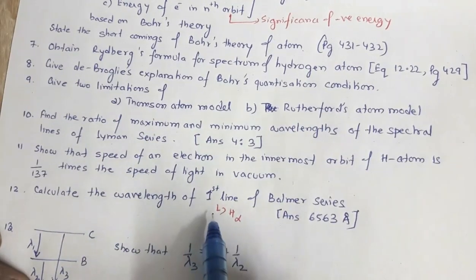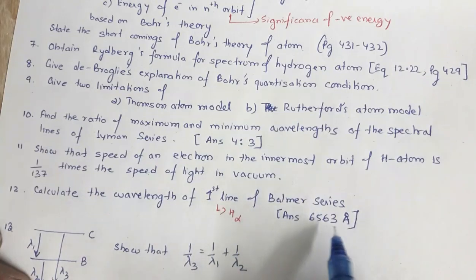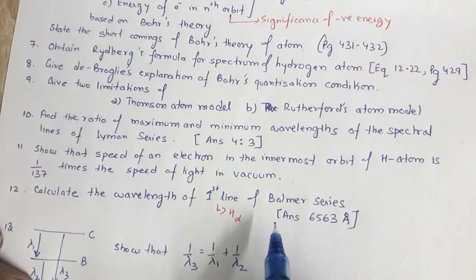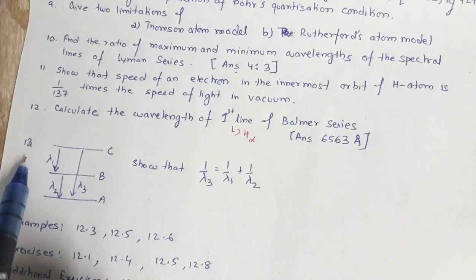Calculate the wavelength of first line of Balmer series which is also called the H alpha line. This is the answer 6563 angstrom. First line means the transition is between n equal to 2 and n equal to 3. Now for question number 13.